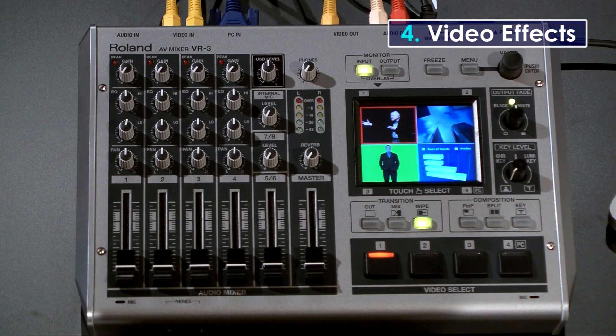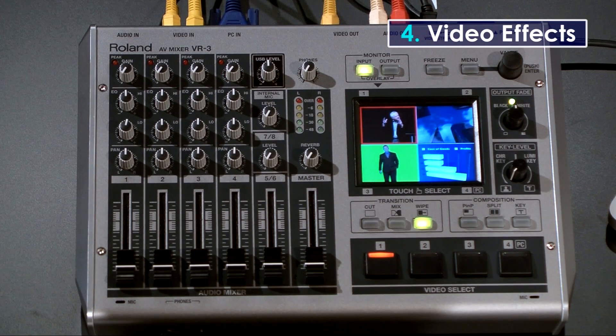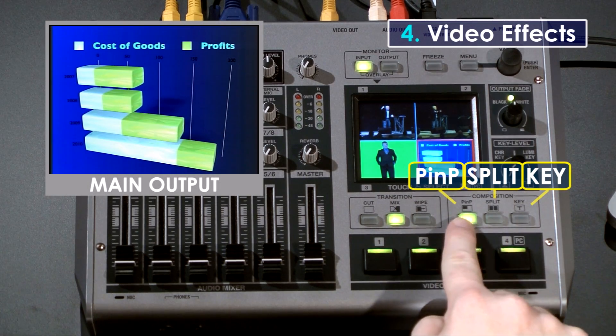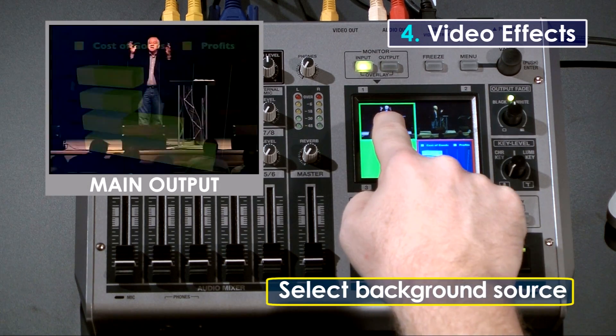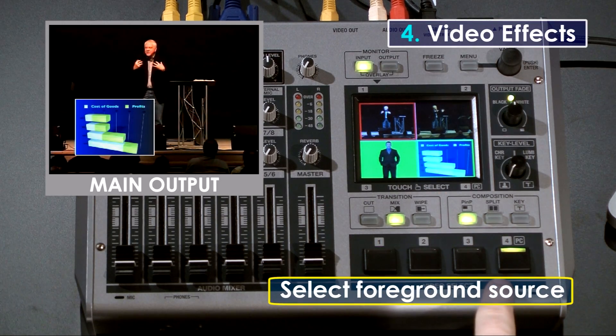The video switcher in the VR3 offers video effects for combining more than one input. Select Picture-in-Picture or Split mode and then choose a background source on the touch display and select the foreground source on the buttons.